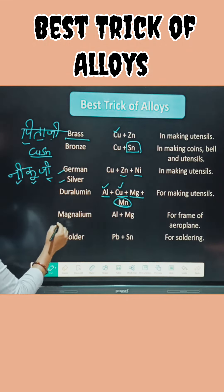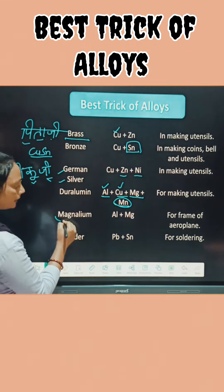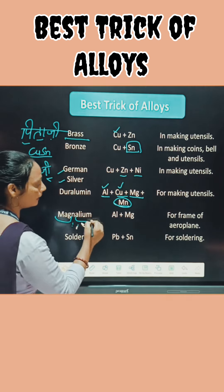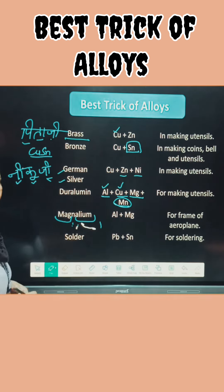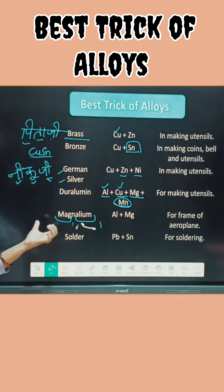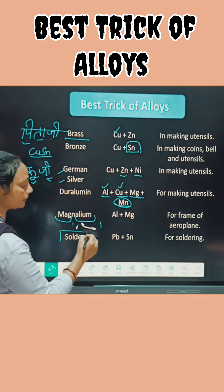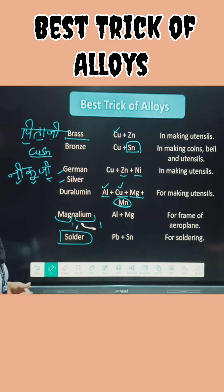Our next term is Magnalium. In this word you can see it is made up of magnesium and aluminium — magnesium and aluminium.